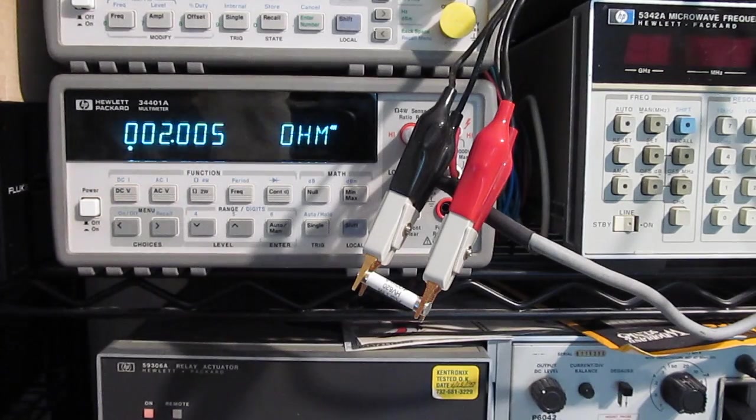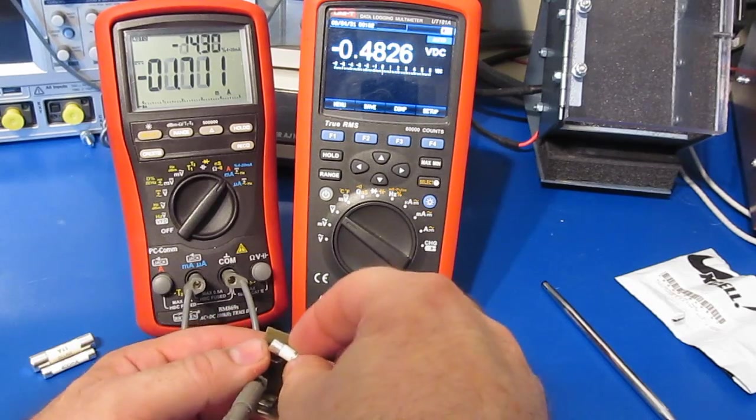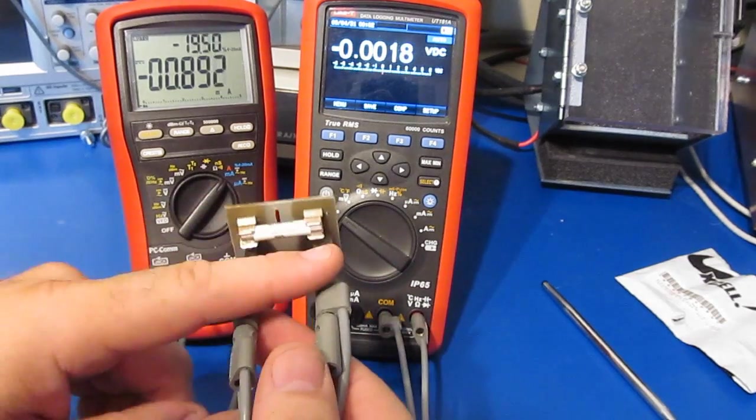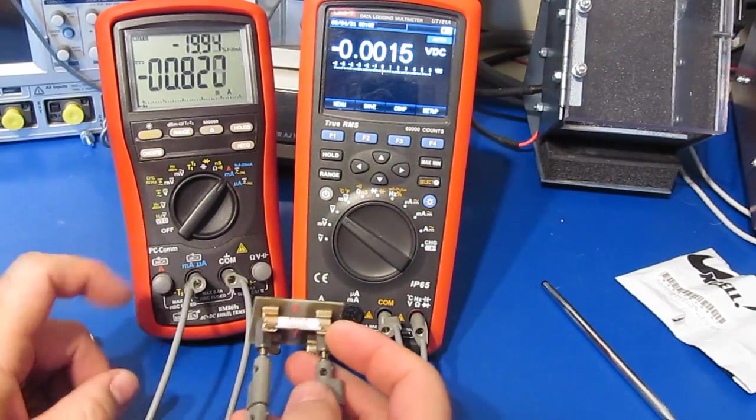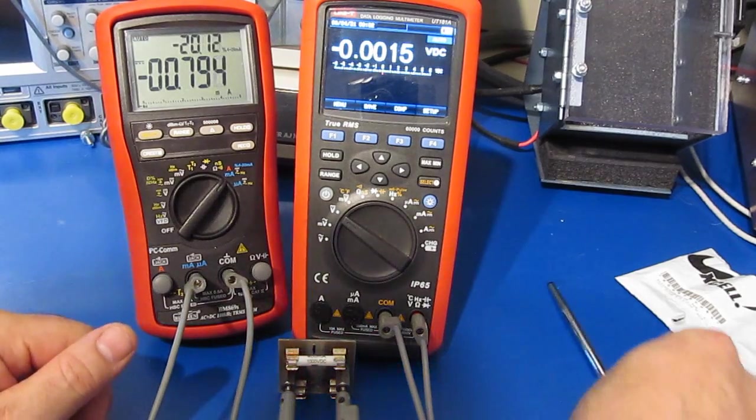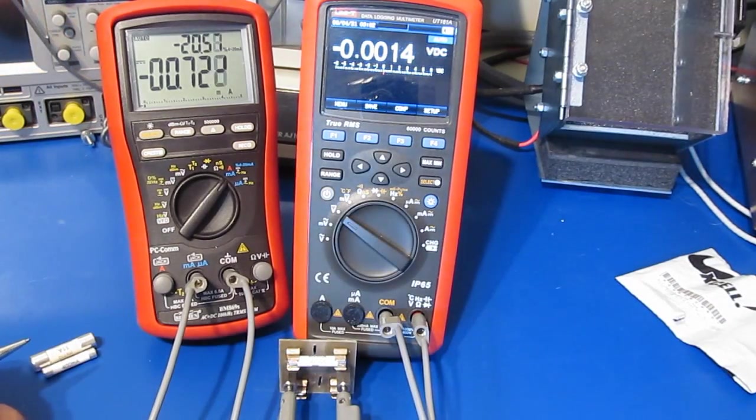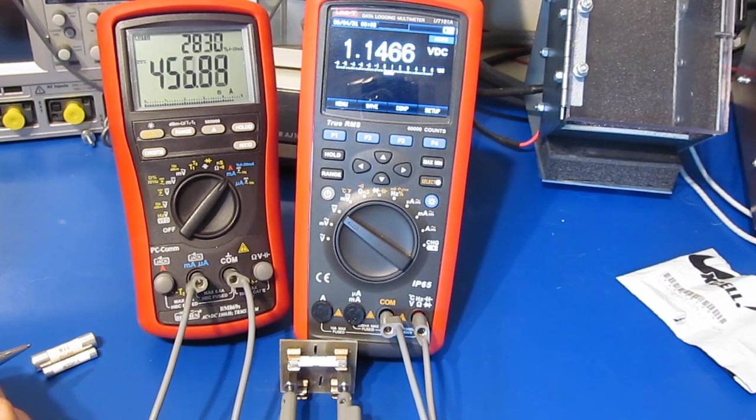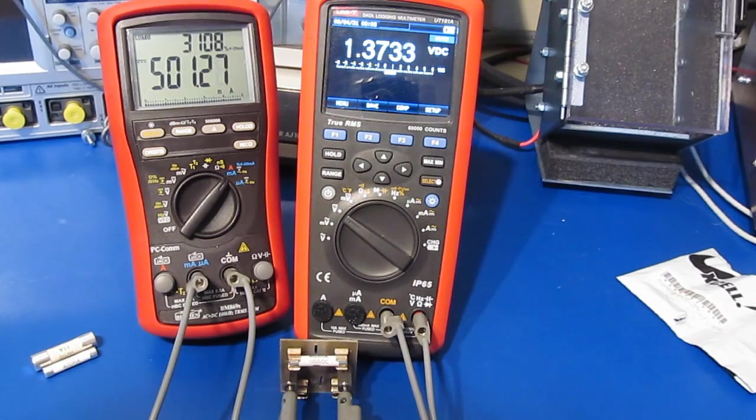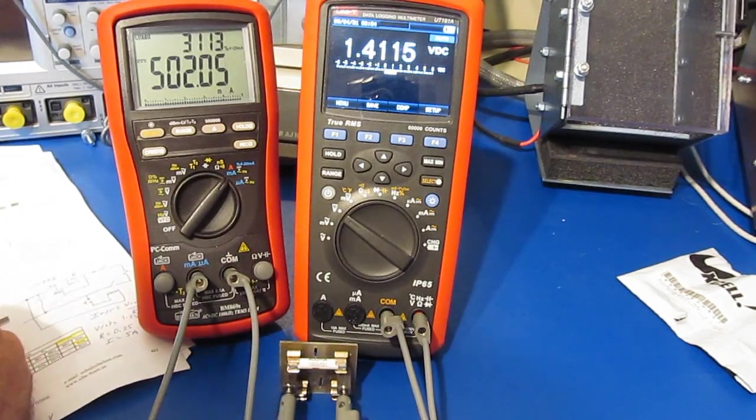On the left I have my Bremen BM869S and on the right the unit 181A. The UT 181A is going to be measuring the voltage drop directly across the fuse while the BM869S will be looking at the current through it. What I'm going to do is apply 500 milliamps through the fuse and then we'll measure the voltage drop. What we'll do is let it sit for about a minute before we take the measurement.